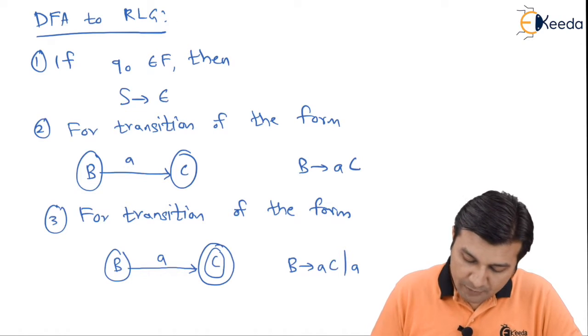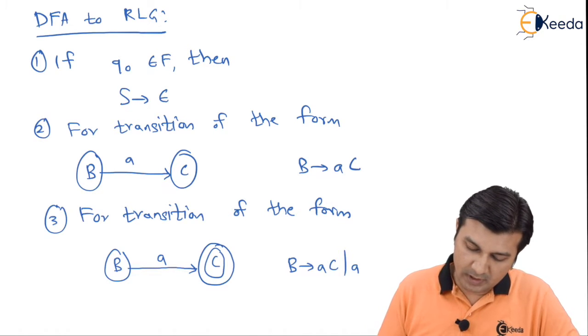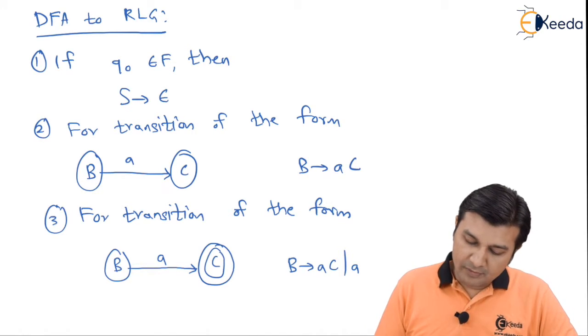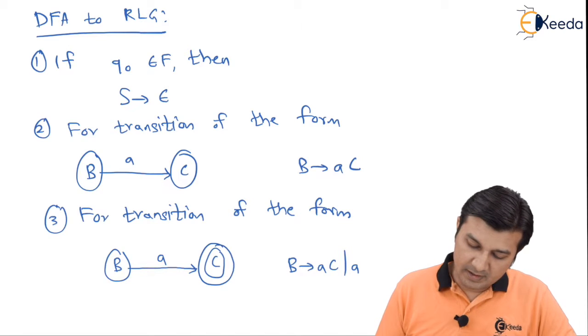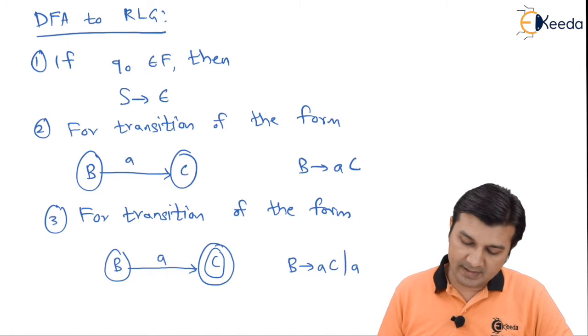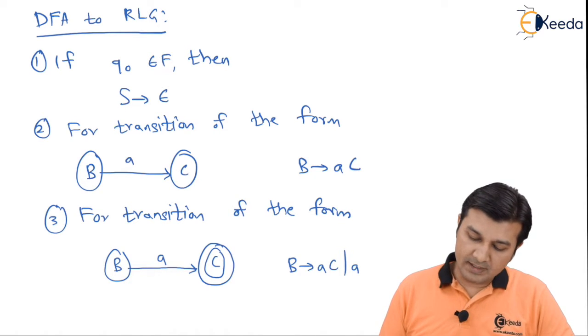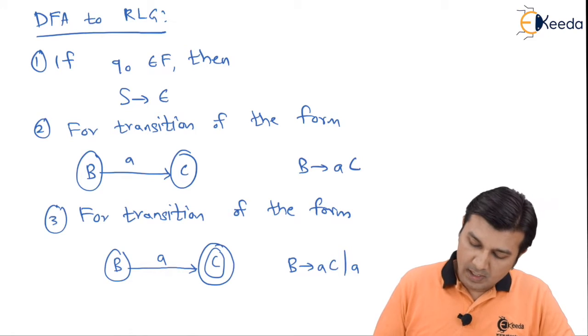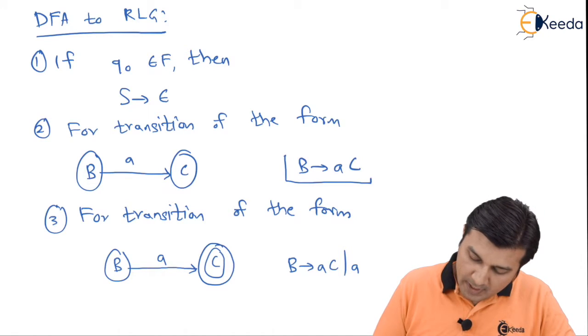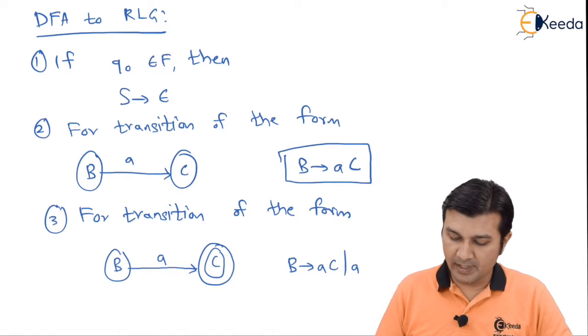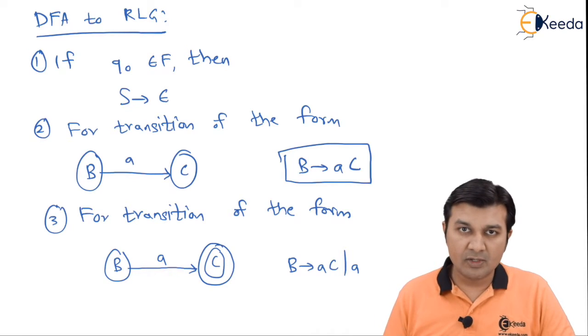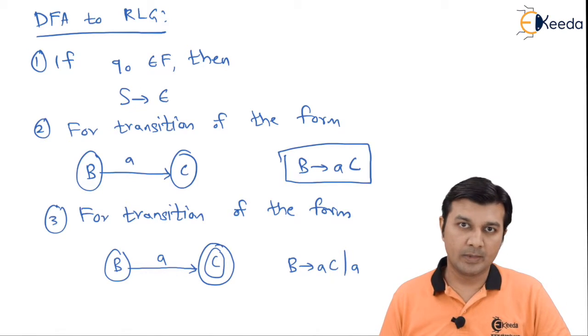If you observe the conversion procedure, it says if q0 belongs to final state then S is going to give me epsilon. For transitions of the form b on a goes to c, I will be having the output as b arrow ac, where we see that ac is in the form of right linear grammar.